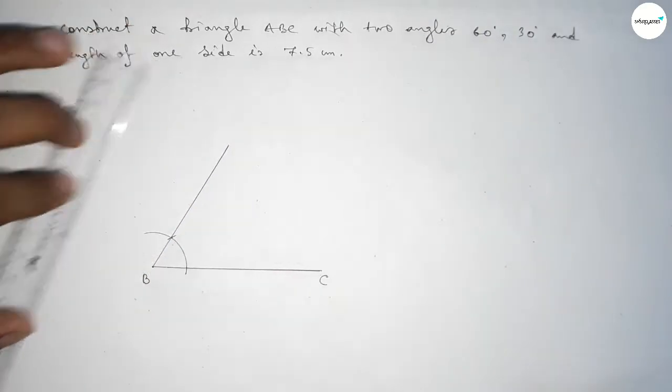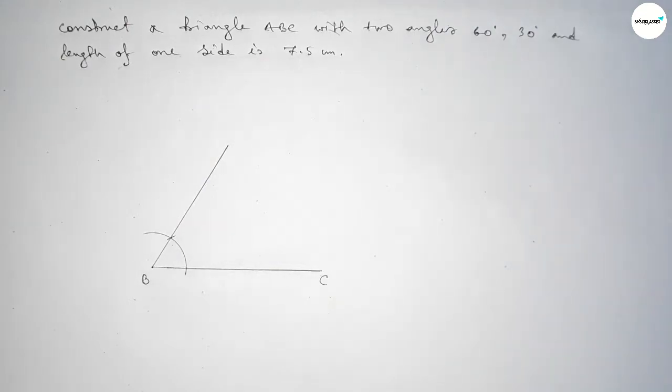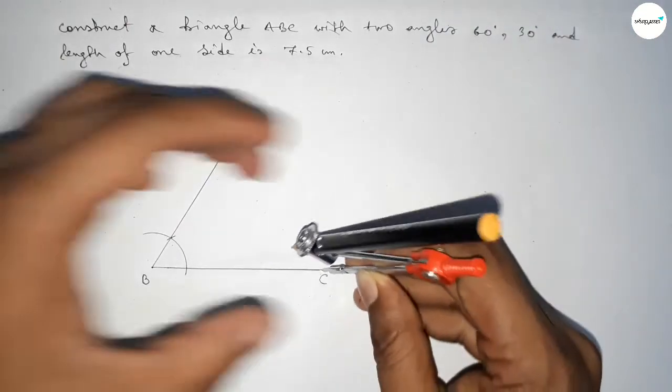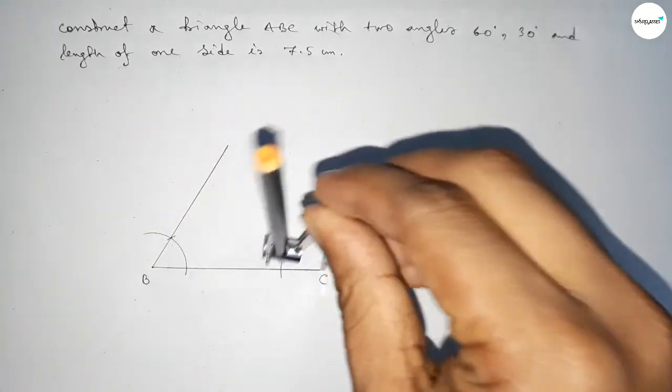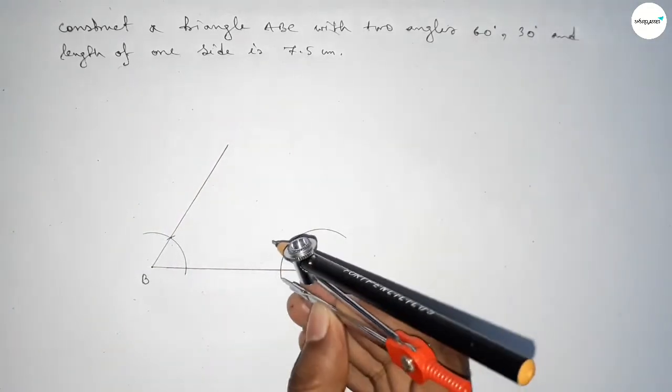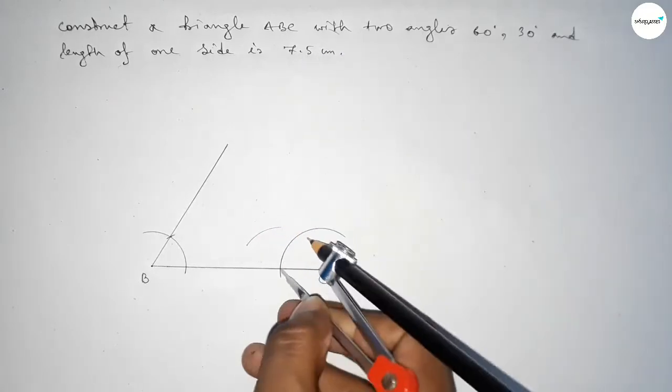Now drawing a 30 degree angle on point C. Putting the compass here and drawing an arc this way. With the same length, putting the compass here and drawing an arc here.